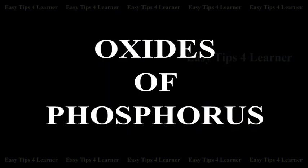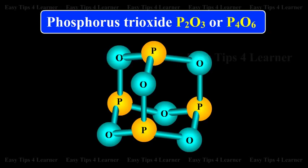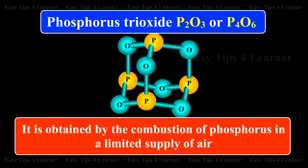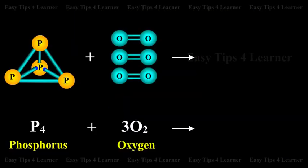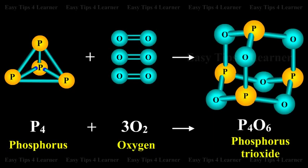Oxides of Phosphorus. Phosphorus trioxide, P2O3 or P4O6, is obtained by the combustion of phosphorus in a limited supply of air. Phosphorus plus oxygen gives Phosphorus trioxide.